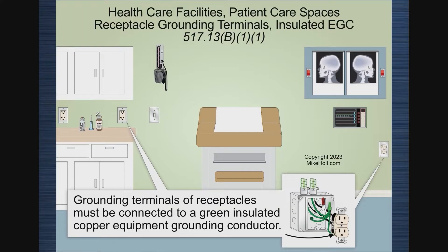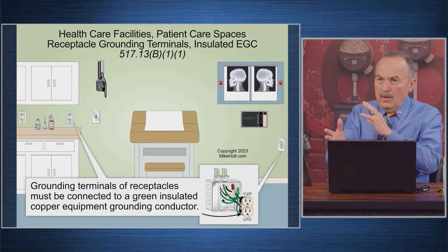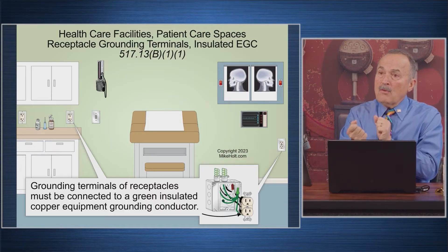Then jumping to Section B: besides having a mechanical effective ground fault current path, I also want to have an equipment grounding conductor of the wire type, because they're connected in two different ways. The thought is that maybe I mess up the pipe, maybe I mess up the connector, but I still have an equipment grounding conductor.